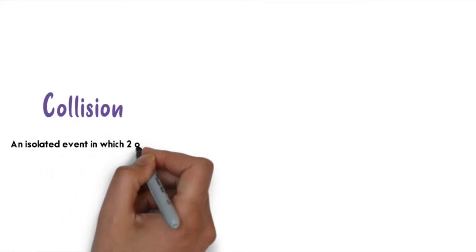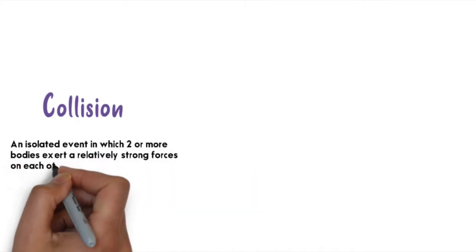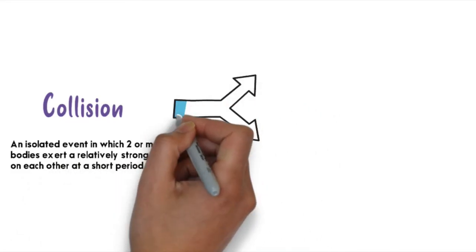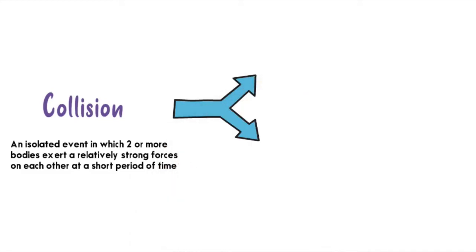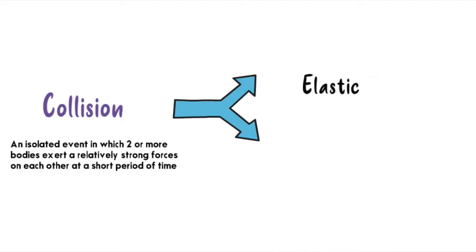Collision can be defined as an isolated event in which two or more bodies exert relatively strong forces on each other at a short period of time. There are two types of collision: the first one is elastic collision, and the second is inelastic collision.